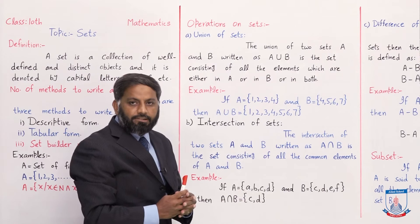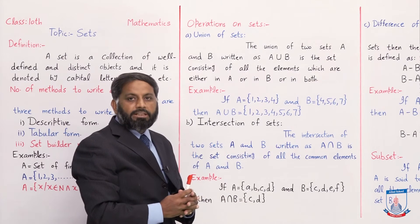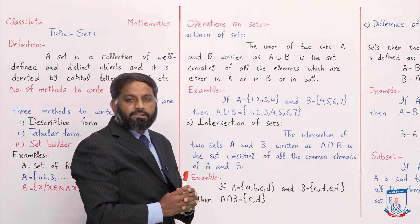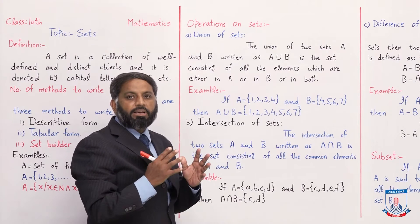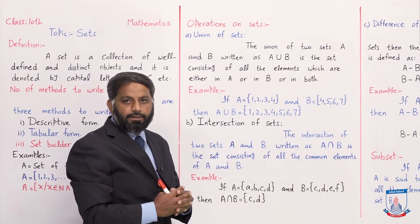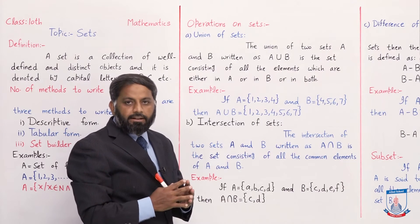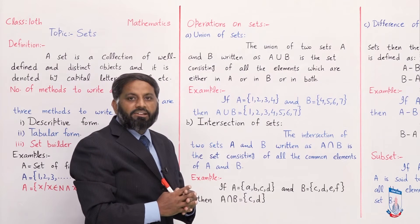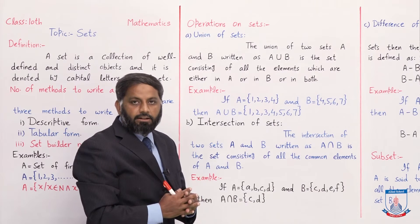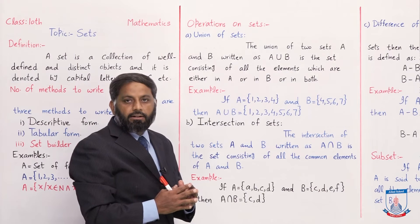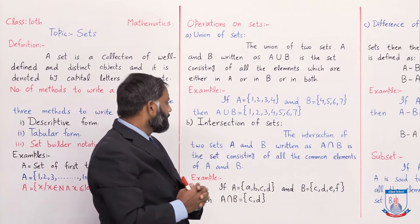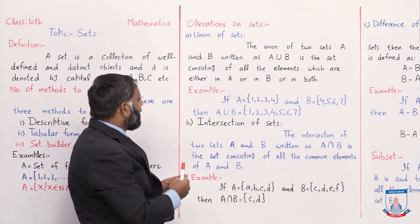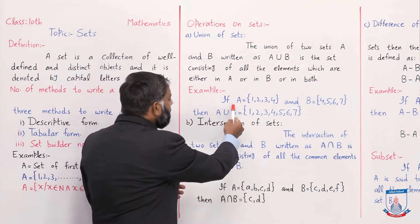Union of sets میں جب دو sets کی union find کرنی ہے تو set A کے تمام elements، set B کے بھی تمام elements، یا دونوں میں جو common elements ہیں — وہ سب لکھے جائیں گے۔ لیکن same elements کو repeat نہیں کریں گے کیونکہ set distinct objects کا نام ہے۔